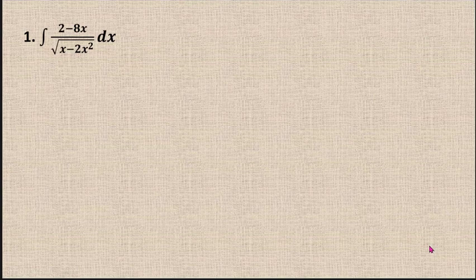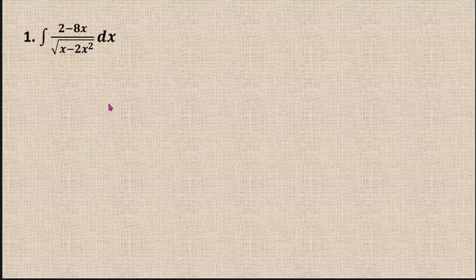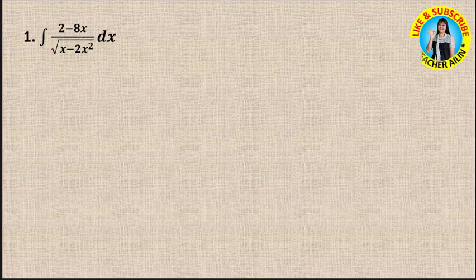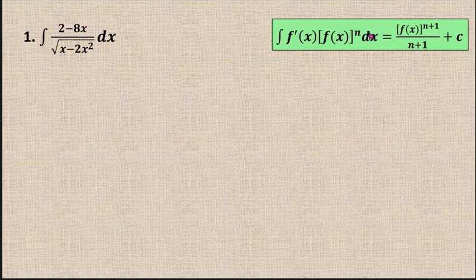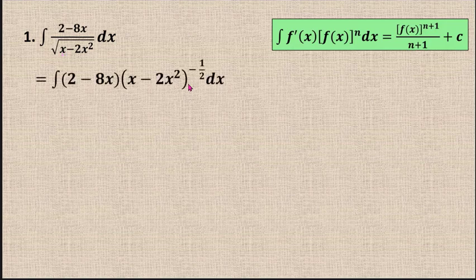Now let's try an example. This is a rational function where the denominator contains a square root. If any part of the integral contains a square root, we focus on the square root. For the first attempt, we try to integrate using the power integration formula. To use this formula, I change the square root to the power of 1 over 2, then bring it up to get the power of negative 1 over 2.